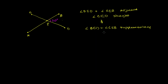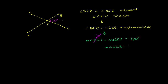Which tells us that the measure of angle BED plus the measure of angle CEB is equal to 180 degrees. Sometimes you'll just see people write angle BED plus angle CEB equals 180 degrees. We already know the measure of angle BED is 70 degrees, so 70 degrees plus the measure of angle CEB is 180 degrees. You subtract 70 from both sides and we get the measure of angle CEB is equal to 110 degrees.